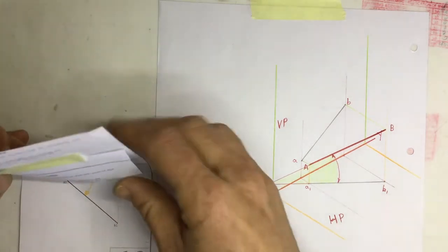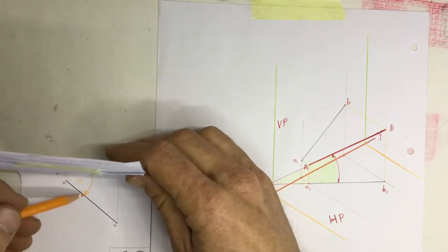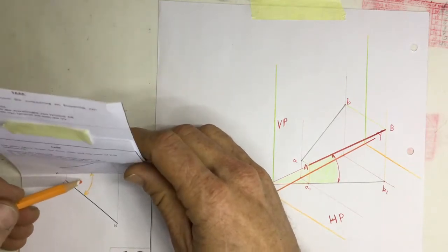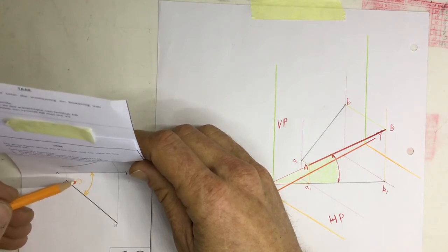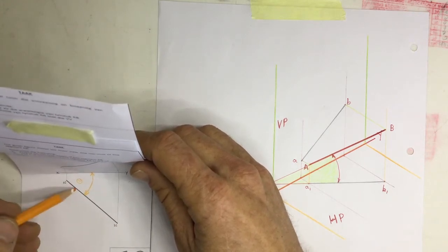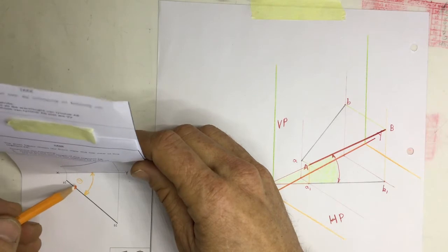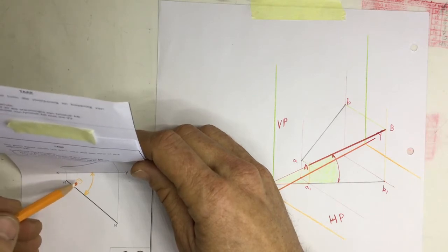But that's not the true angle of inclination to the vertical plane. Why? Because I don't have a true length over here. You can only get true angles of true lengths.